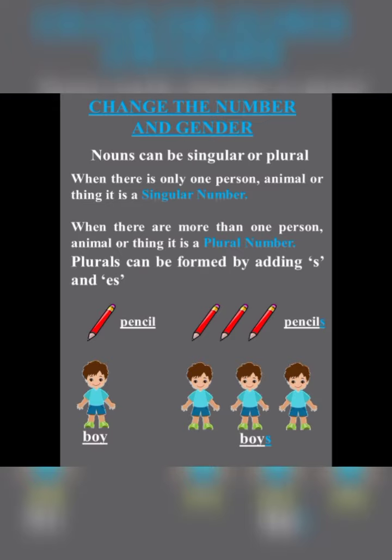Nouns can be singular and plural. A noun can mean one or more than one person, animal, place or thing. When we talk of one, we call it singular. To show that there are more than one things, we often add 's' or 'es' to the noun. We add 's' to the words like bell, chair, book and tree.